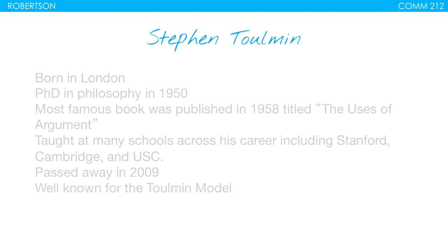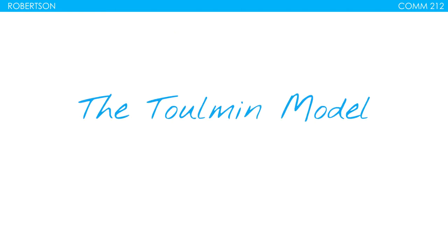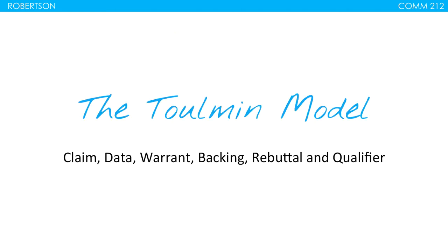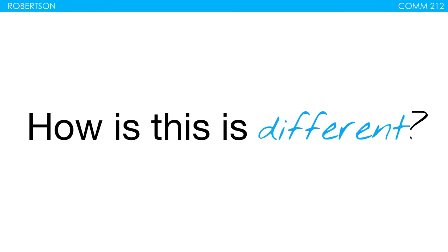The Toulmin model has six different components: claim, data, warrant, backing, rebuttal, and qualifier. These are the six different components of the Toulmin model.